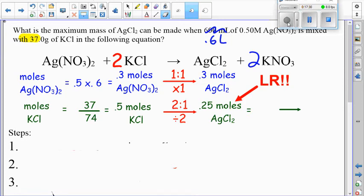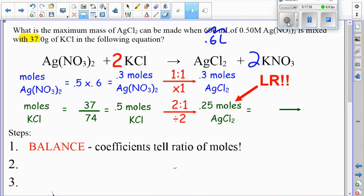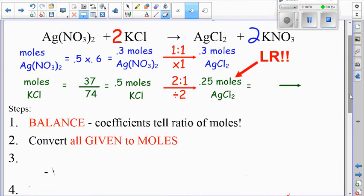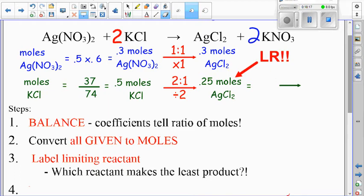If I go through my steps here real quick. The first one, as always, is balance. I'm hoping that you do that one in your sleep. After we balanced, we converted all our given stuff to moles. We found our moles of silver nitrate, we found our moles of potassium chloride. That third step, which in my opinion is the most important, is we need to label the limiting reactant. That's the one that makes the least product. In this case, potassium chloride makes the least product. It only makes 0.25 moles of the silver chloride, whereas silver nitrate made 0.3 moles. So we're going to run out of that KCl, it's going to be all used up.